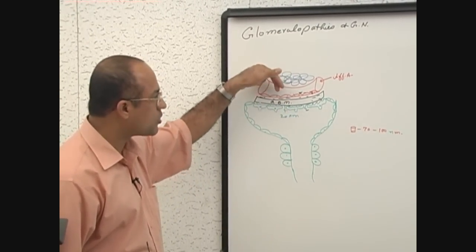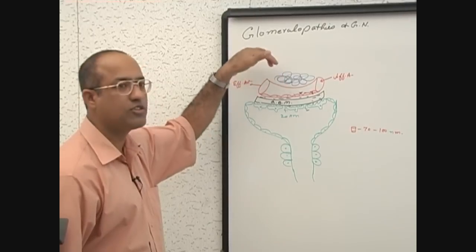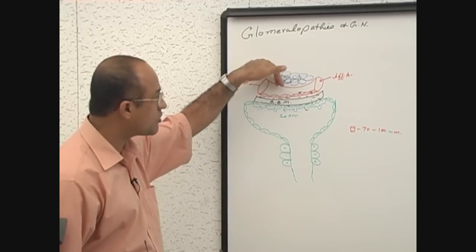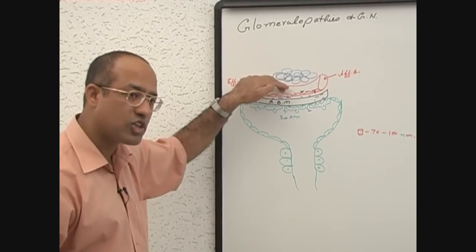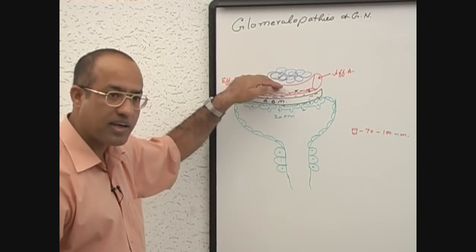So any molecule or plasma proteins or RBCs, WBCs or platelets or any substance which has to go down, it has to face the size barrier as well as charge barrier.